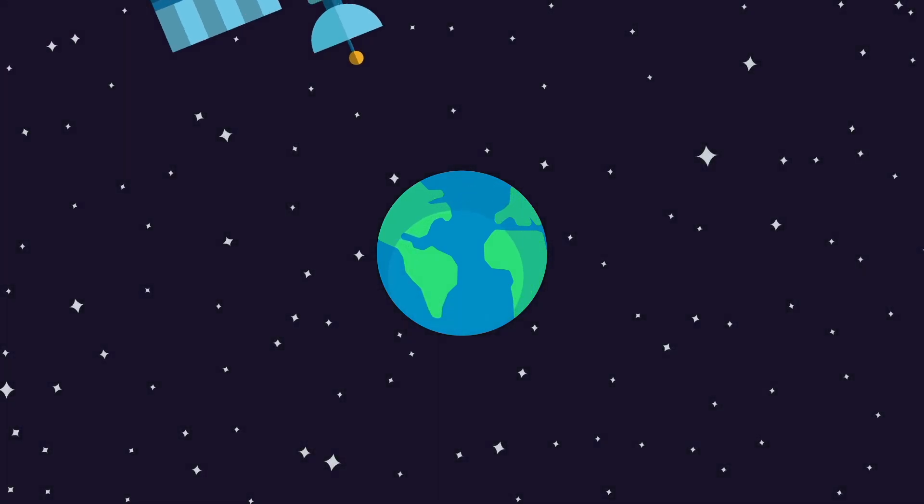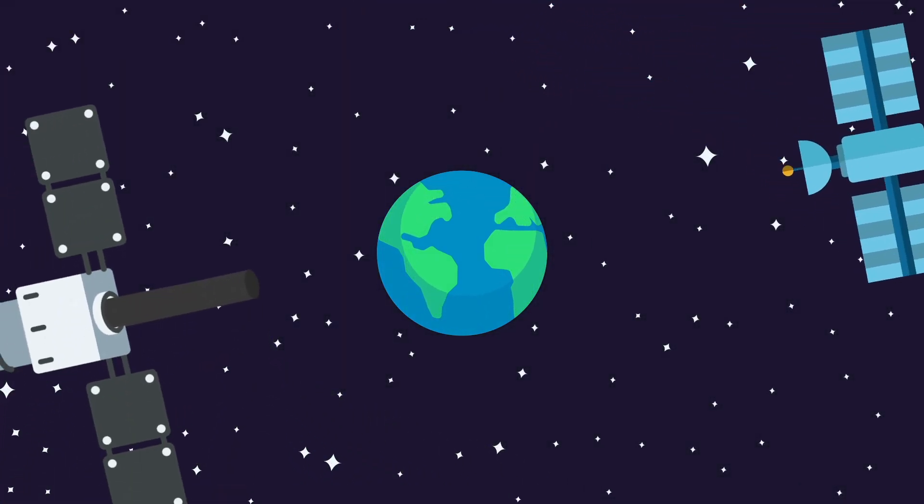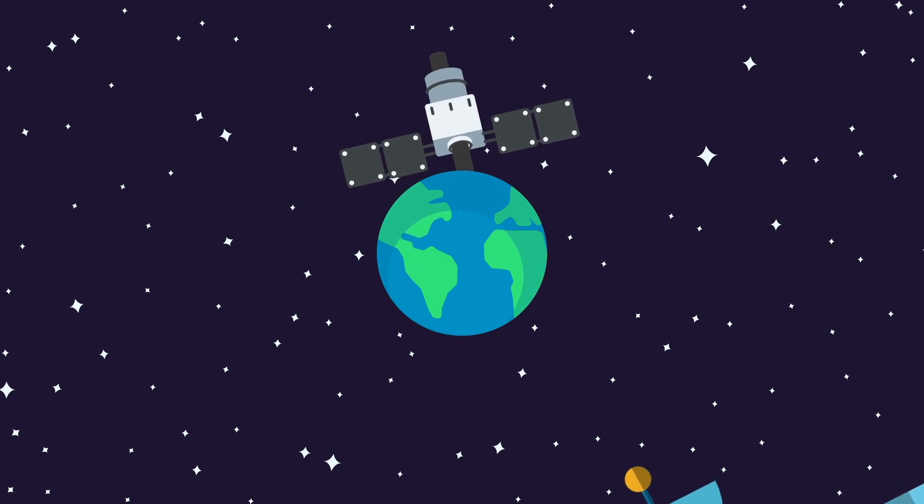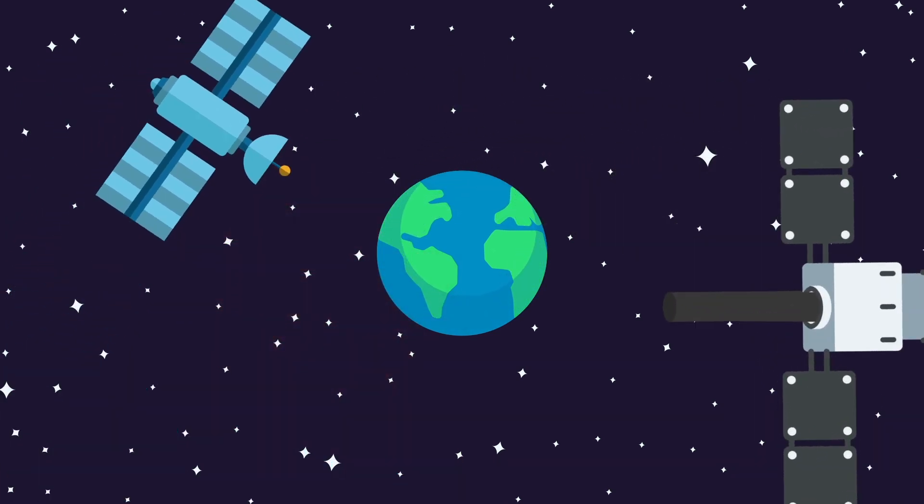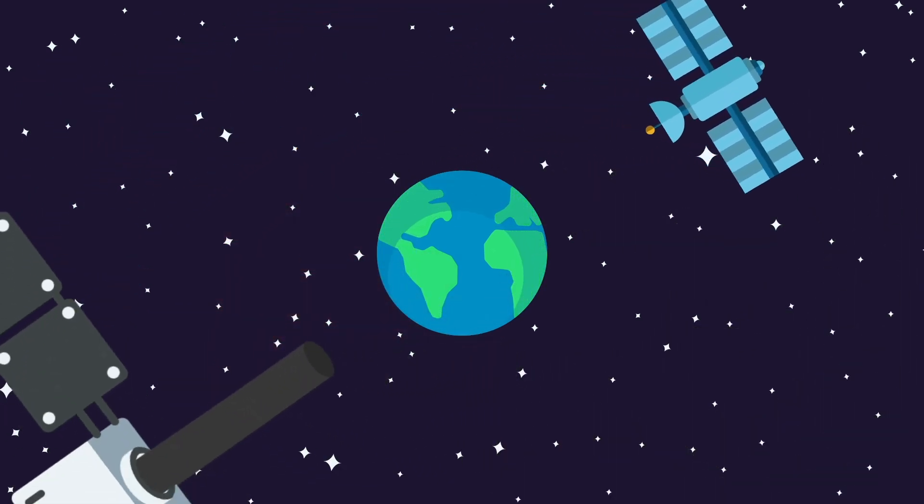How It Would Work: A pair of satellites orbiting several hundred miles above the Earth act as the weapon system. The first satellite is tasked with targeting and communication, pinpointing any location on Earth with precision.